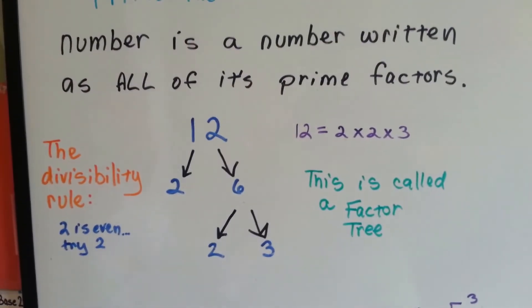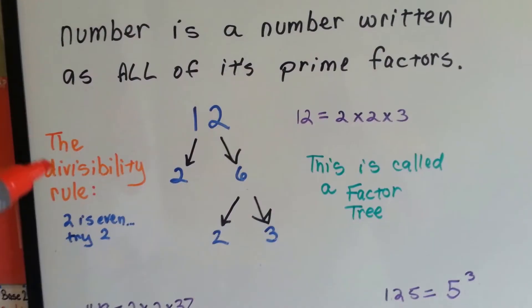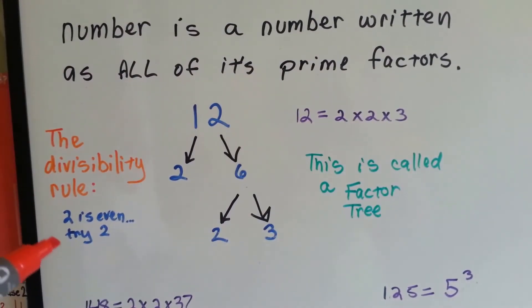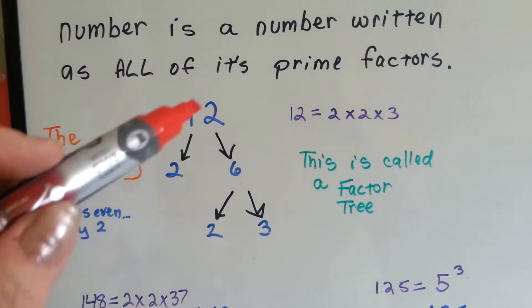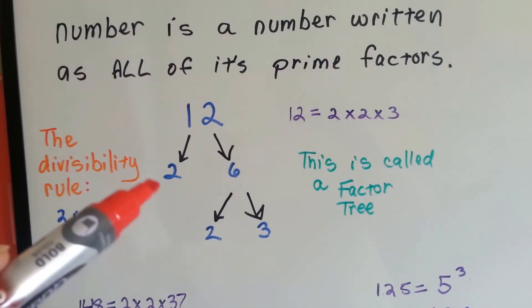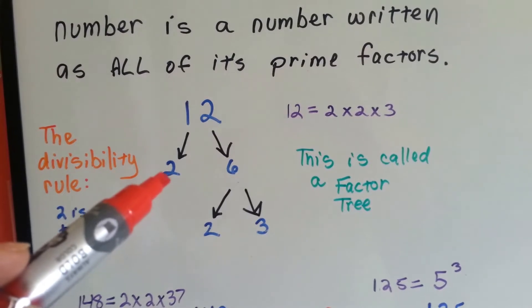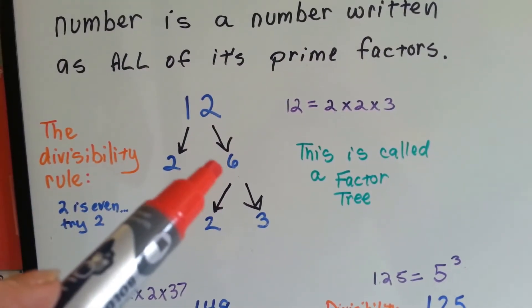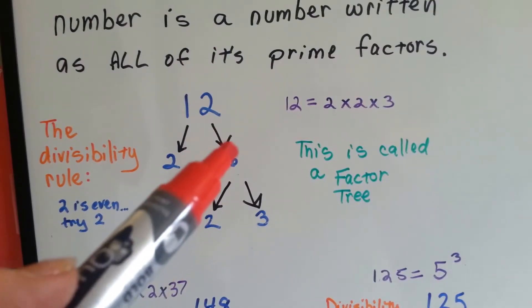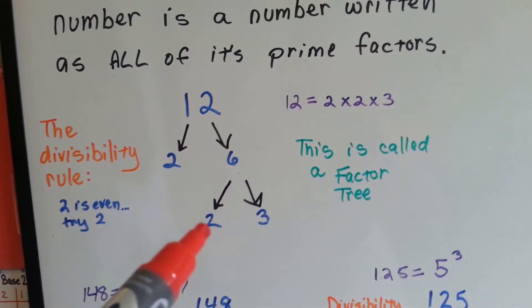If we wanted to do prime factorization for 12, we could use the divisibility rule that we learned in our last video, number 1.2. 2 is even, it ends with a 2, so we're going to try 2. So, 2 times what is 12? 2 times 6. Now we can break the 6 down. 2 times what is 6? 2 times 3.